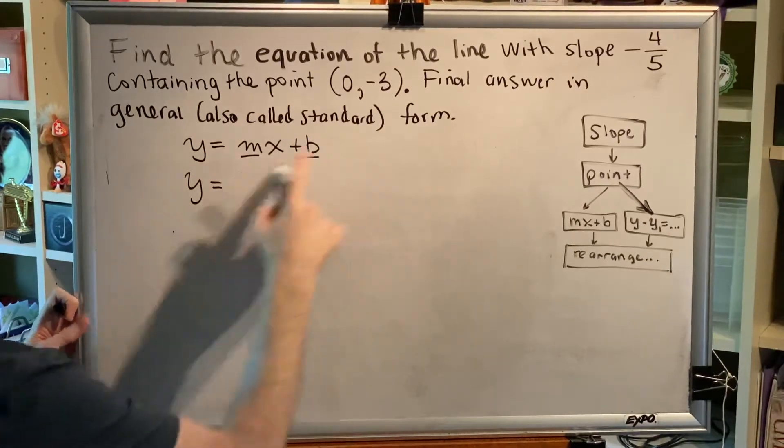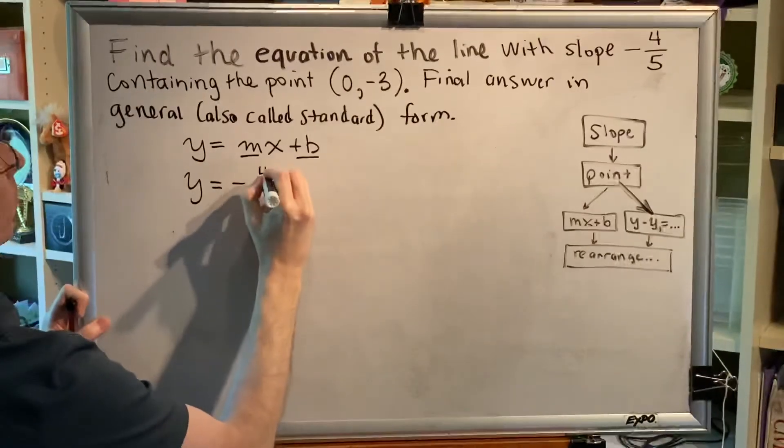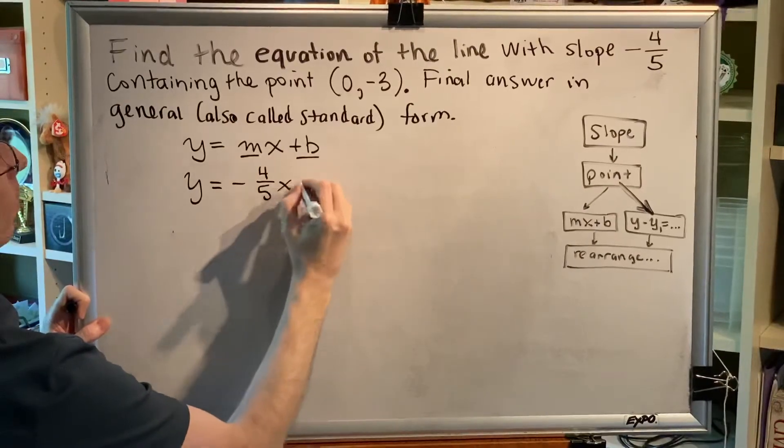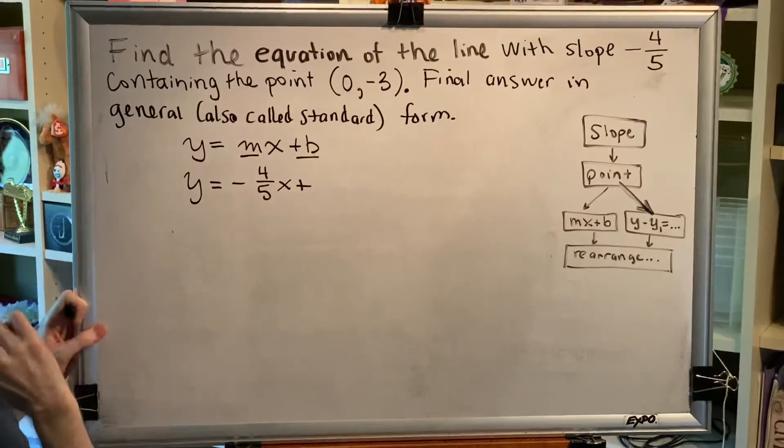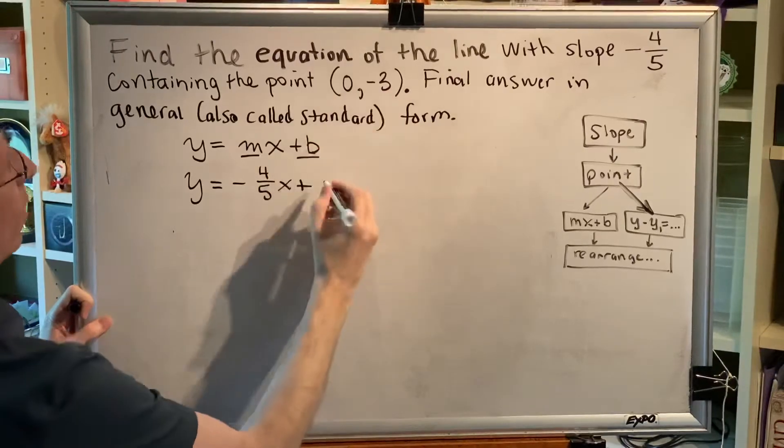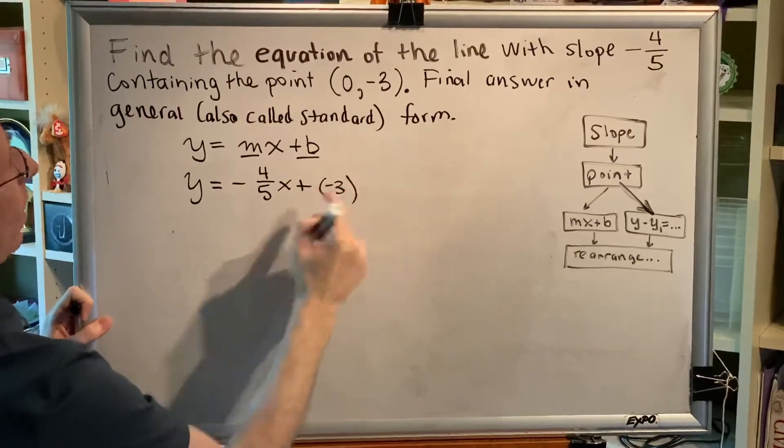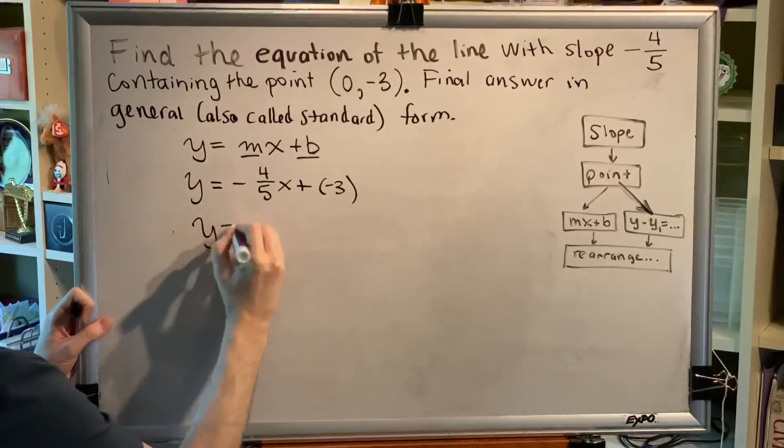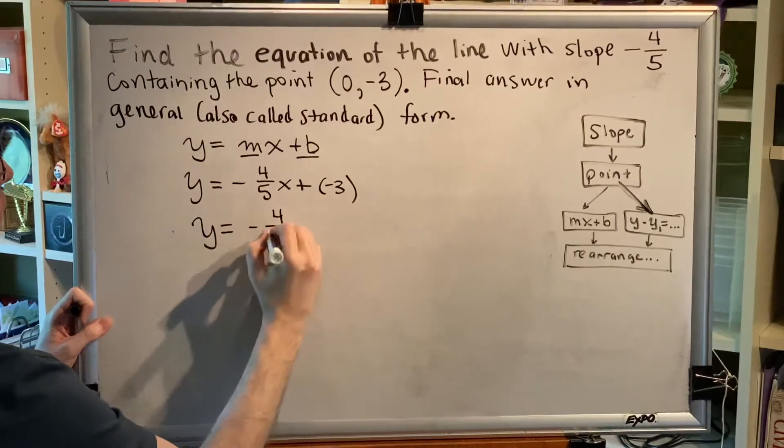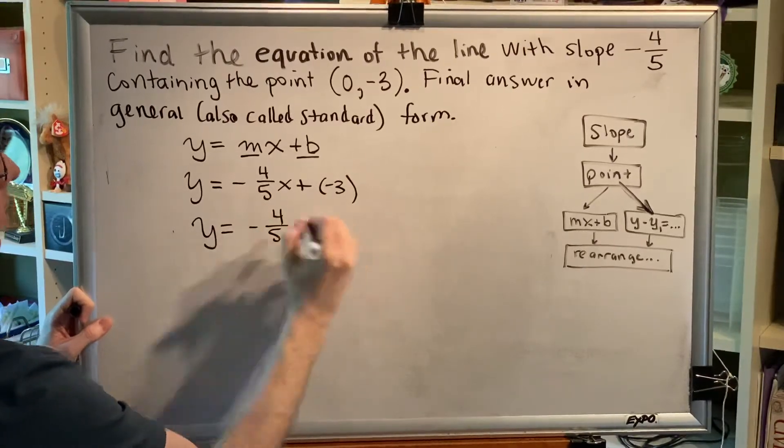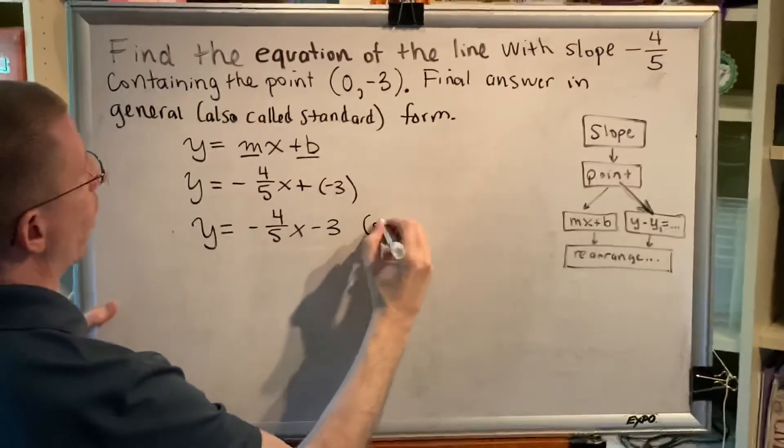All right, m, the slope, is negative four-fifths. b, the y-coordinate of the y-intercept, is negative three. Adding a negative is the same as subtracting, so we get y equals negative four-fifths x subtract three. This is the slope-intercept form.